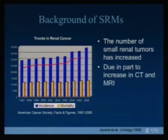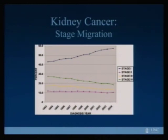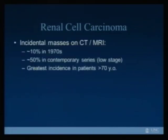A little background about small renal masses: over time the number of small renal tumors has increased. From 1997 to 2006 there's been this increase, due in part because we're imaging more in the ER — we do CTs and MRIs on many people. We call that an incidental finding whenever we find something not really related to why you got the imaging in the first place. On the graph separated by stage, these small renal masses are by definition stage one, and you can see that top line going up — that's really responsible for the increase in renal masses.